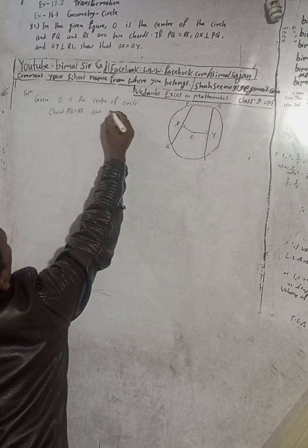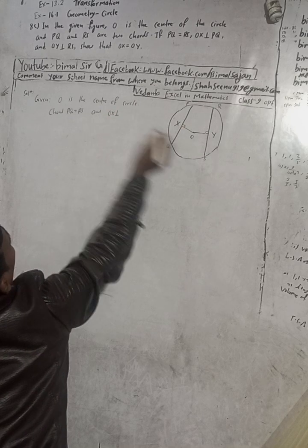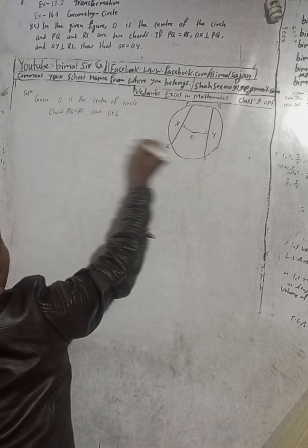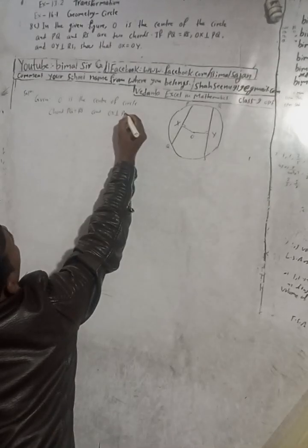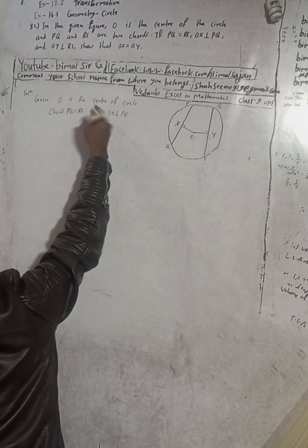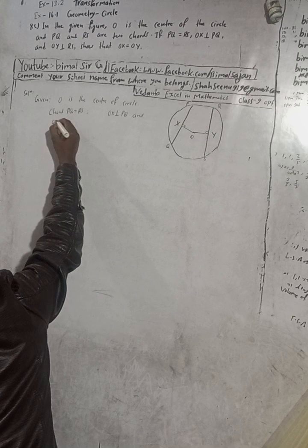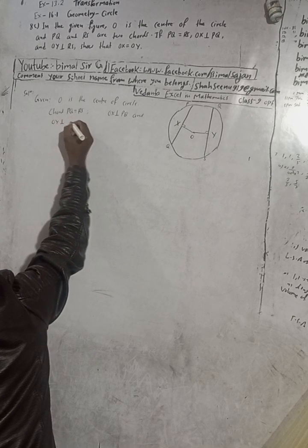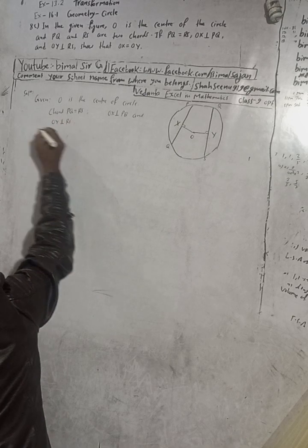And OX is perpendicular to PQ, and OY is perpendicular to RS. That is, the perpendicular from the center to the chord.